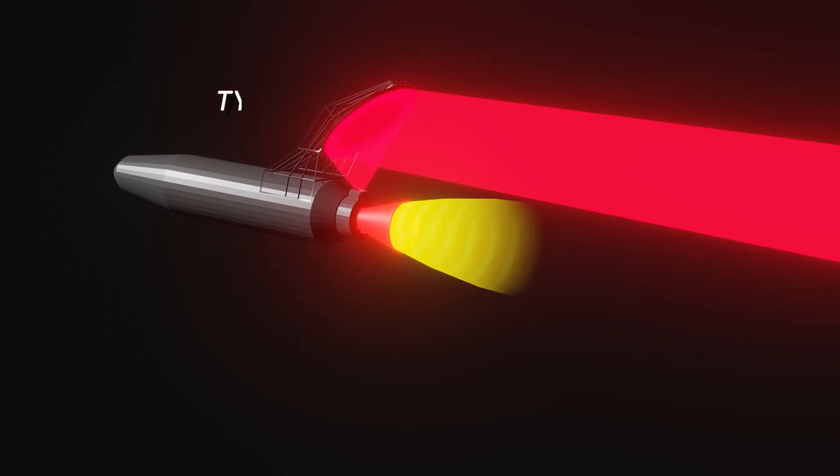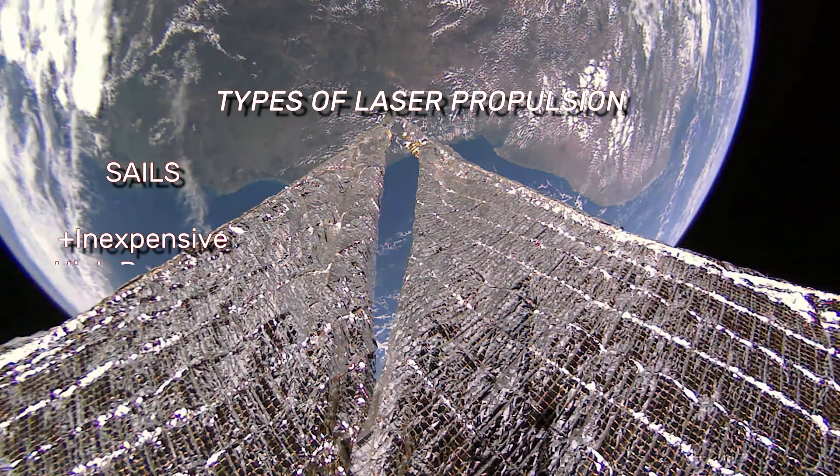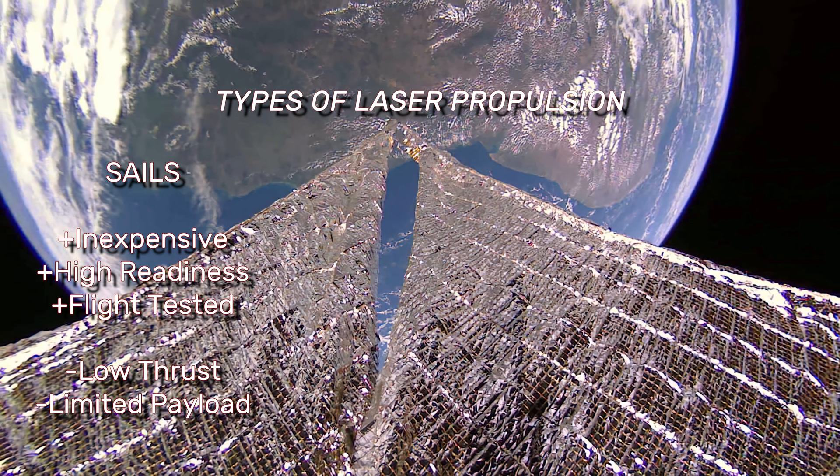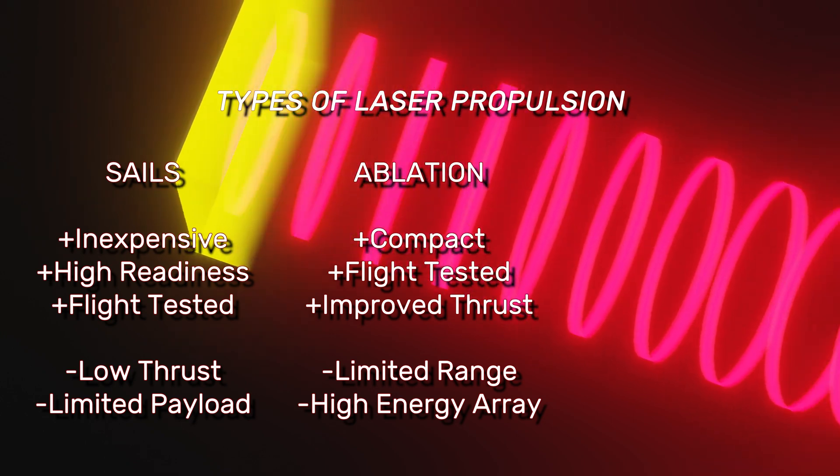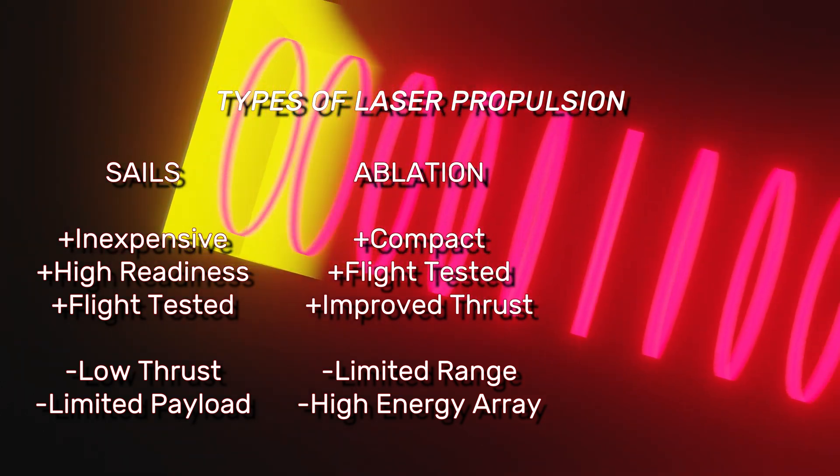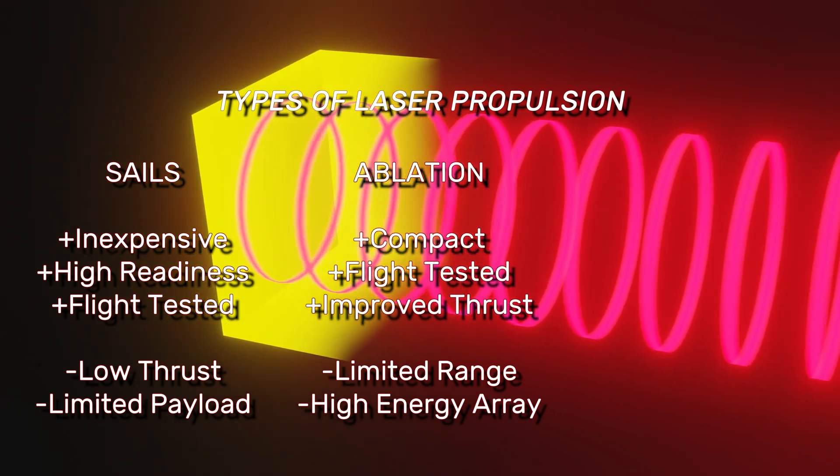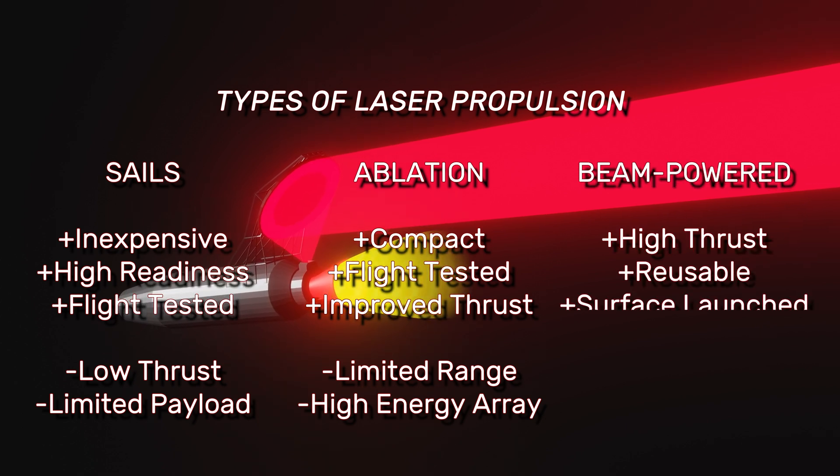Types of laser propulsion can be classified generally as laser light sails, where photons are used to push a thin sail; ablative laser propulsion, where lasers are used to turn a solid propellant into a plasma which imparts momentum on the vehicle; and beam-powered propulsion, where lasers or another type of electromagnetic radiation delivers momentum or thermal energy to a fuel mass carried by the vehicle.